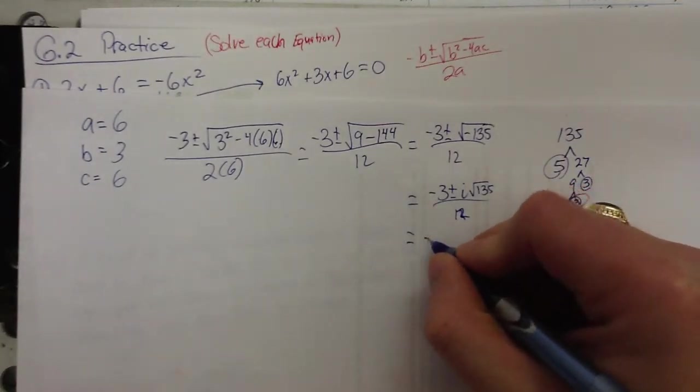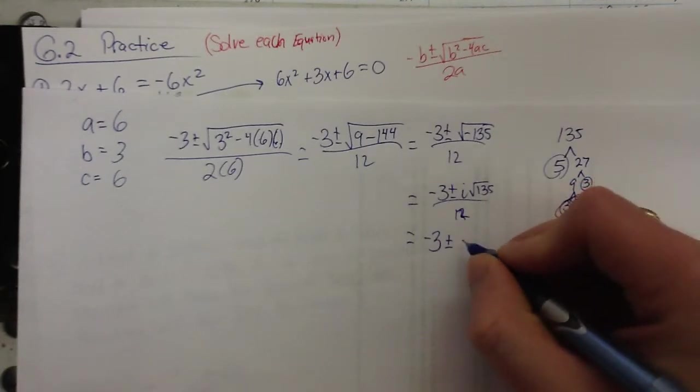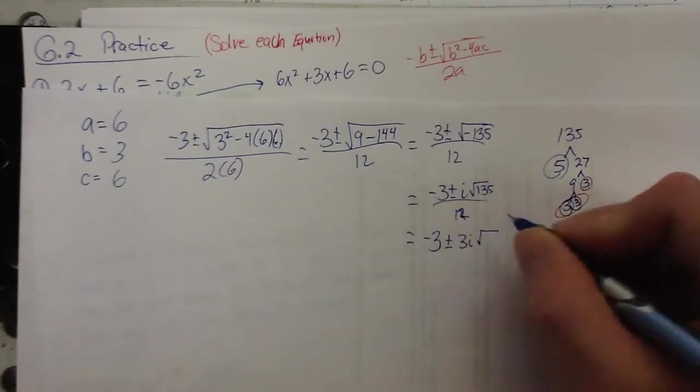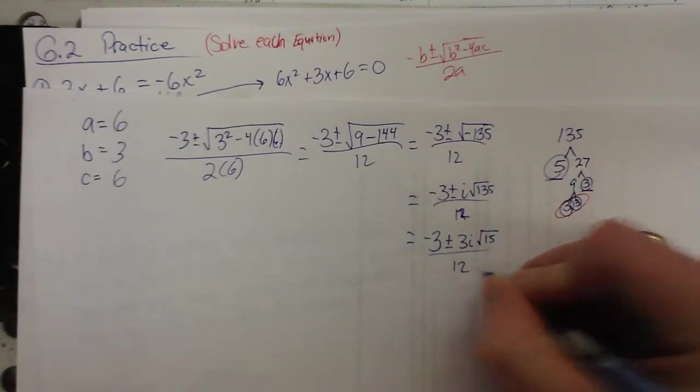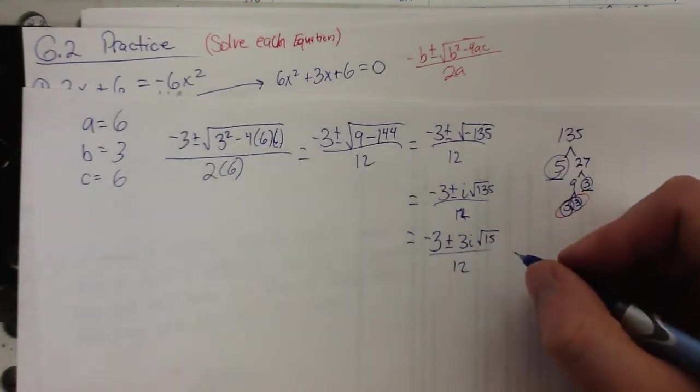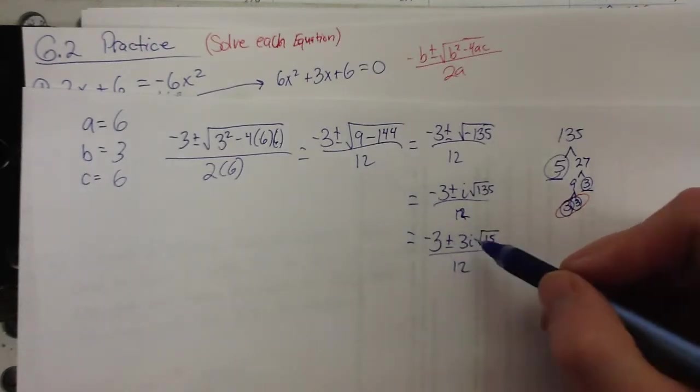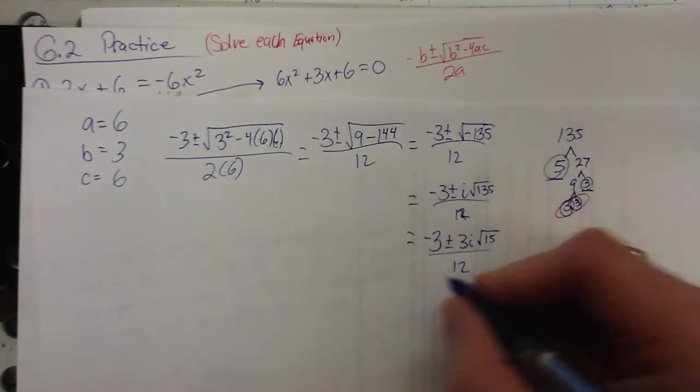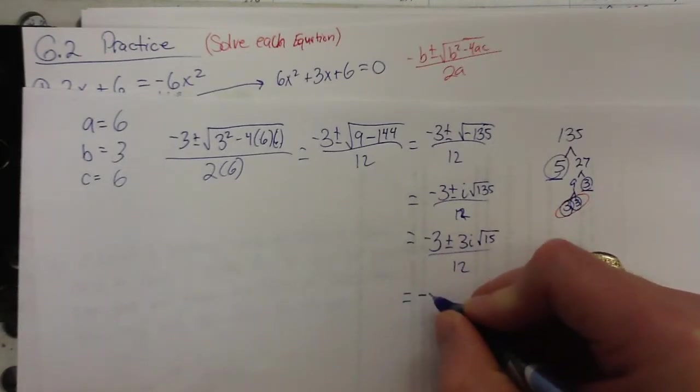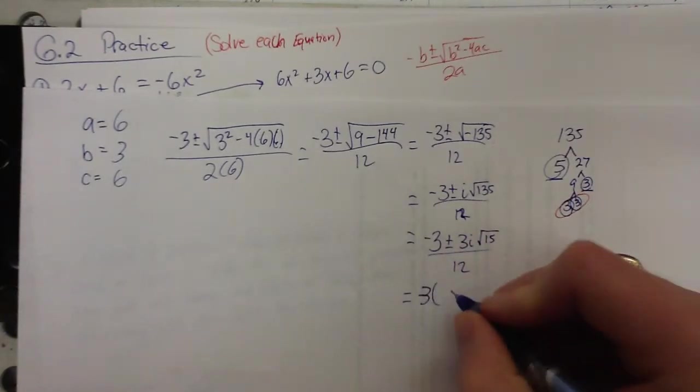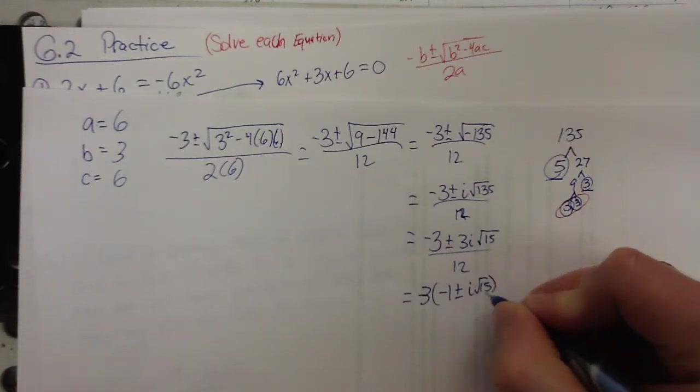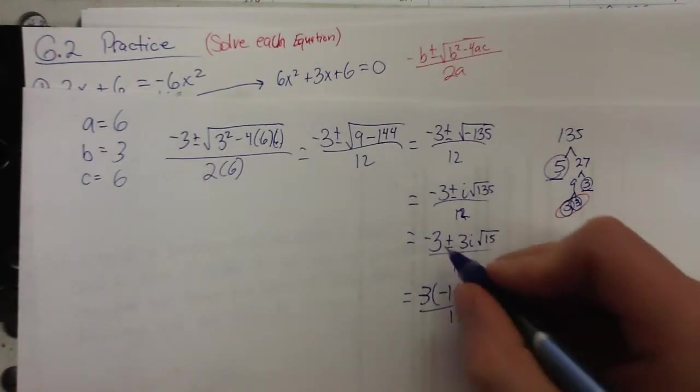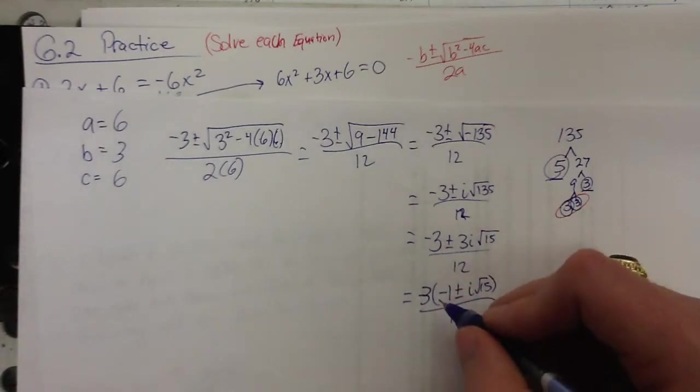So, let's rewrite this again. Negative 3, plus or minus a pair of 3's came out with the i. Under the radical, you have a 5 and a 3 left, so 15, all over 12. Now, do you have a common factor among 3, 3, and 12? Well, you should know that's 3. The way I'm going to do this is to put this common 3 out front.